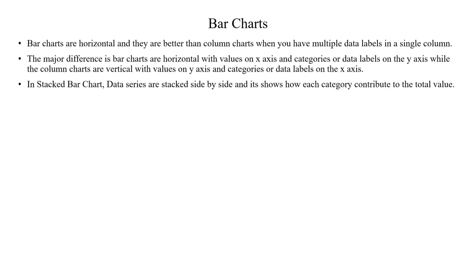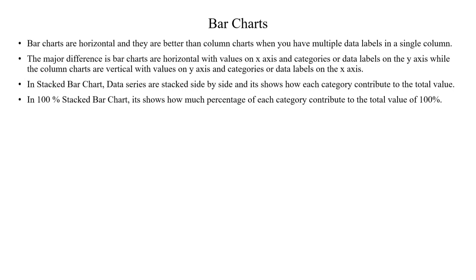The total value is represented as a stack. We can easily understand what the total value is. For example, if there are 4 categories and the total value is 100, each of the 4 categories would be 25. This makes it easy to understand the total value at a glance.